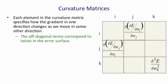So the off-diagonal terms in a curvature matrix correspond to twists in the error surface. A twist means when you travel in one direction, the gradient in another direction changes. If we have a nice circular bowl, all those off-diagonal terms are zero. As we travel in one direction, the gradient in other directions doesn't change.